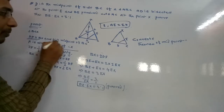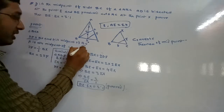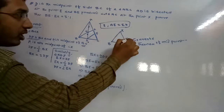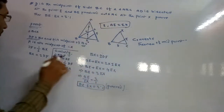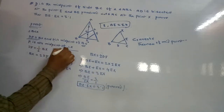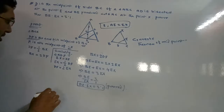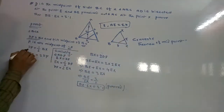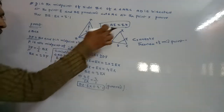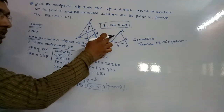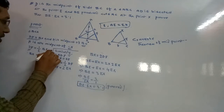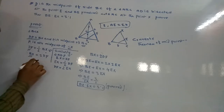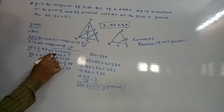By the converse midpoint theorem, since DF is parallel to BX and D is the midpoint of BC, F is the midpoint of CX. Therefore, DF equals half of BX, which means BX equals 2DF. This is our first condition.